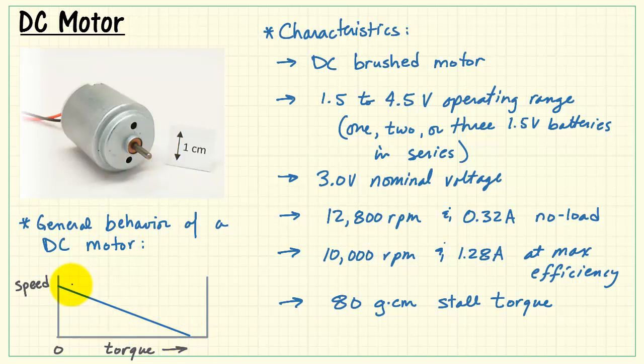At the no-load condition, we have maximum speed. This is when torque is zero. Looks like we have the maximum speed then of 12,800 RPM.